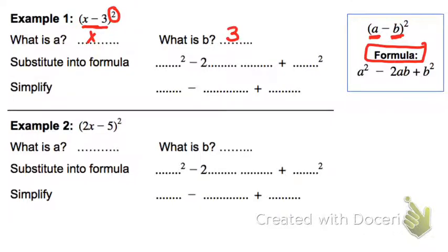Now I'm going to substitute that x and 3 into the formula. So it would be a squared, which is x squared, minus 2 times a times b, so 2 times x times 3, plus b squared, which is 3 squared.